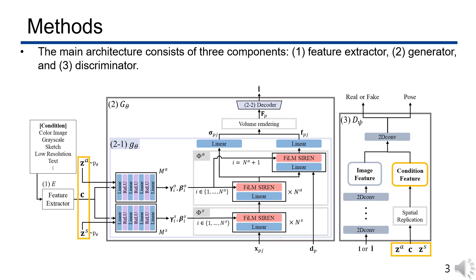The main architecture consists of three components. First, a feature extractor that extracts global feature vectors from the given conditions. Second, a generator network that creates an image by reflecting the conditions. And finally, a discriminator network that distinguishes real images from fake images based on the condition input and that predicts the camera poses of fake images for the PD losses.